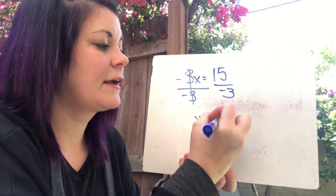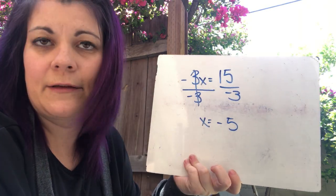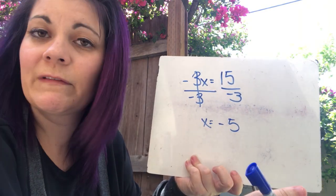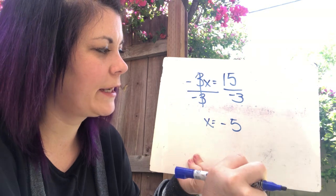But 15 divided by negative 3 is negative 5, because a negative divided by a positive is a negative. And 15 divided by 3 is 5. So negative 5.